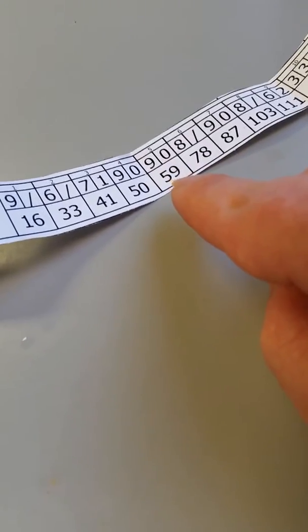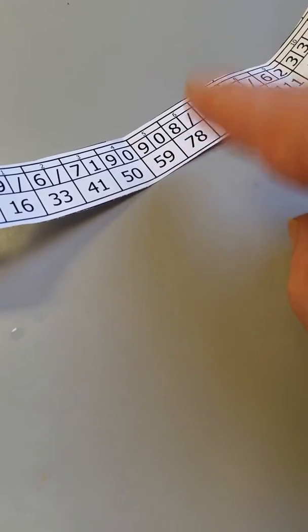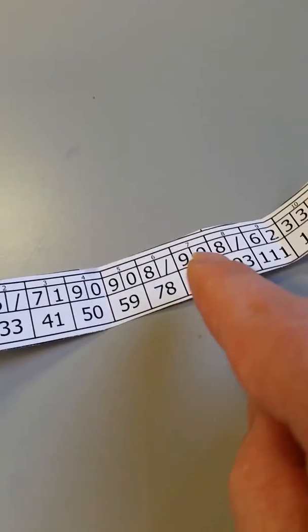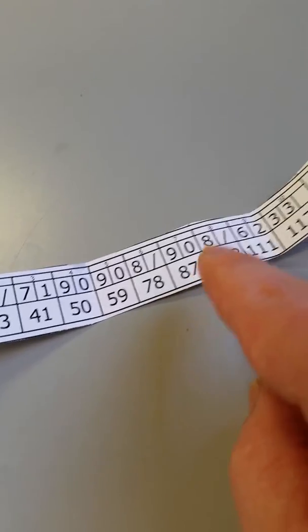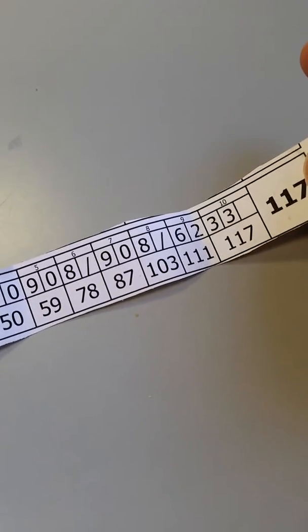Then I got nine zero and I got 59. Eight spare, 78. Then 90 makes 87. And then here I got another spare, eight spare, 103.